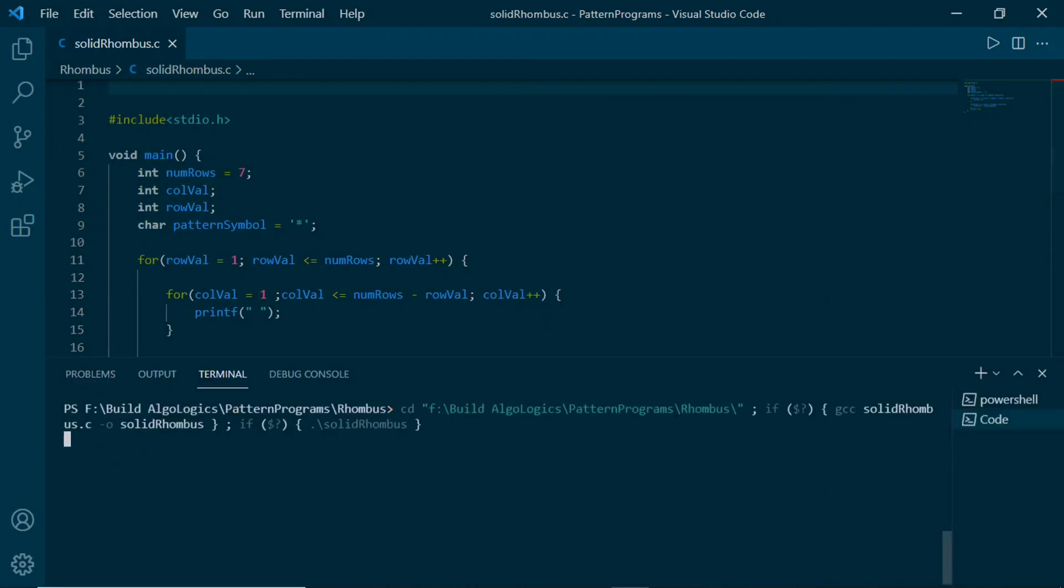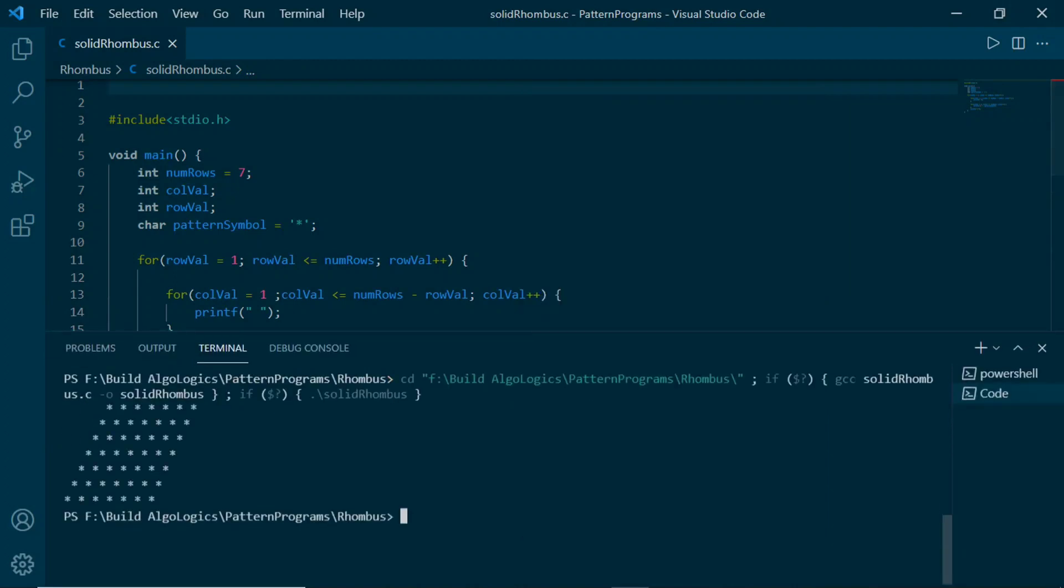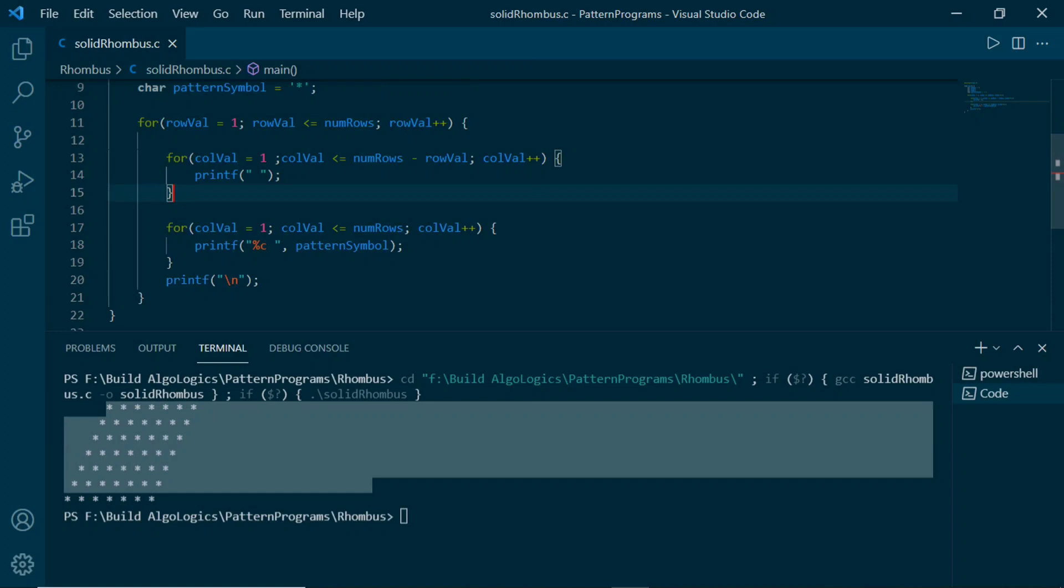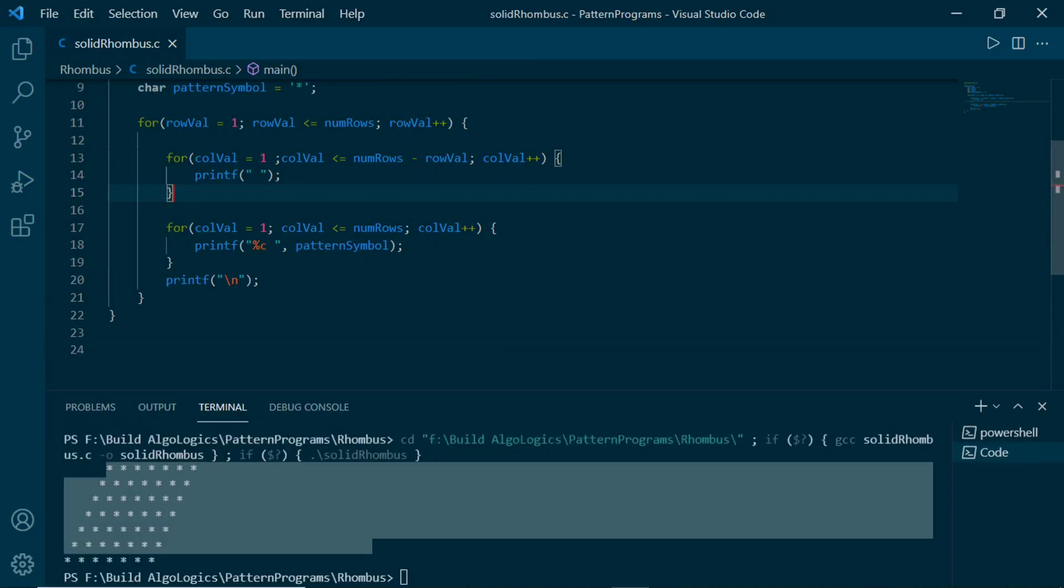Let's give it a try. We'll include this condition. Now run it. We get our rhombus pattern printed here, but this time using this extra for loop.